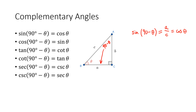And this is what the 'co' in those functions stands for — the co stands for complementary. So cosine is the complementary of the sine, and cosecant is the complementary of the secant. If you were wondering why we have three names and then 'co' in front of each of the three other names, this is why. This is why we have that naming convention.